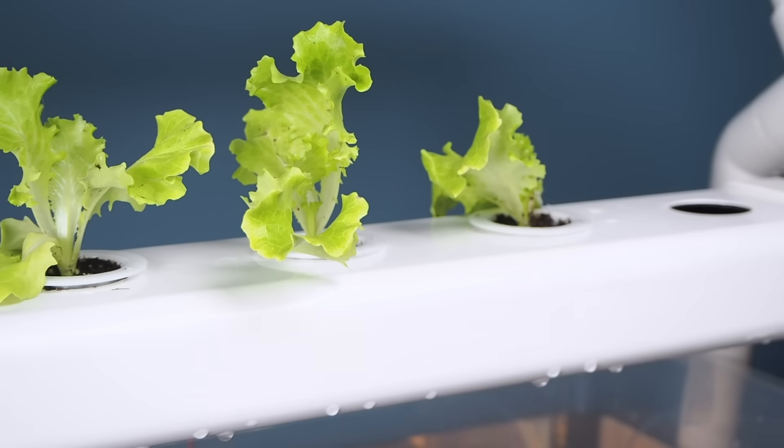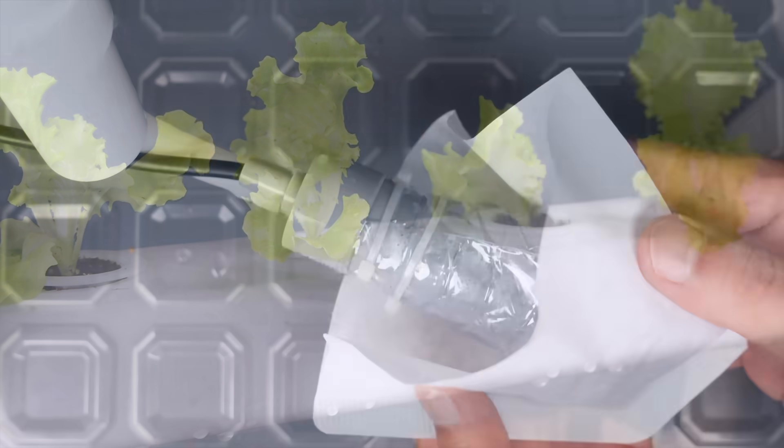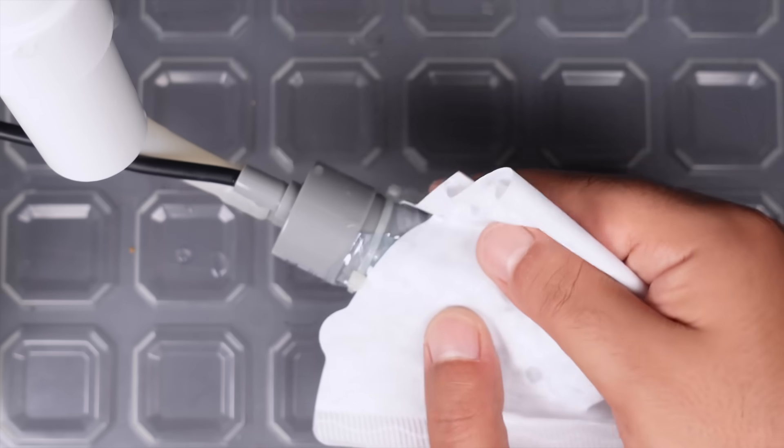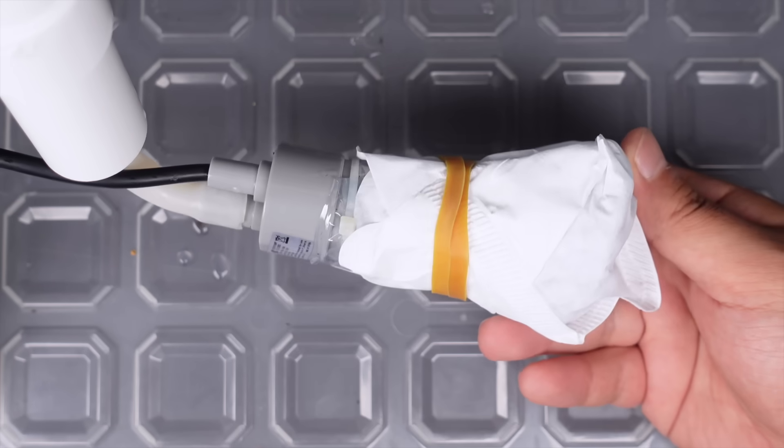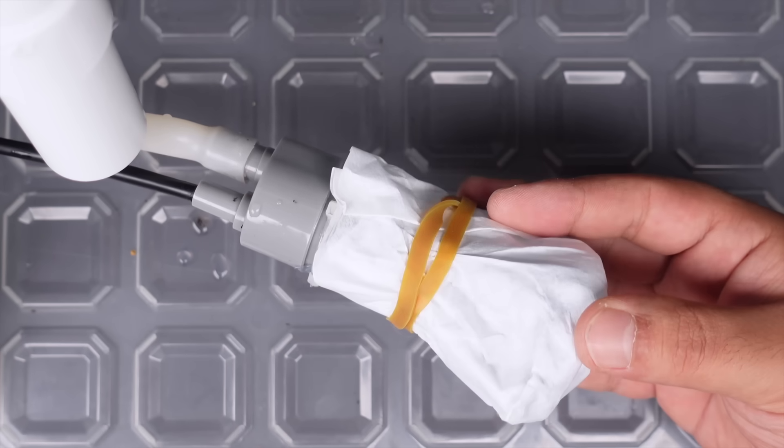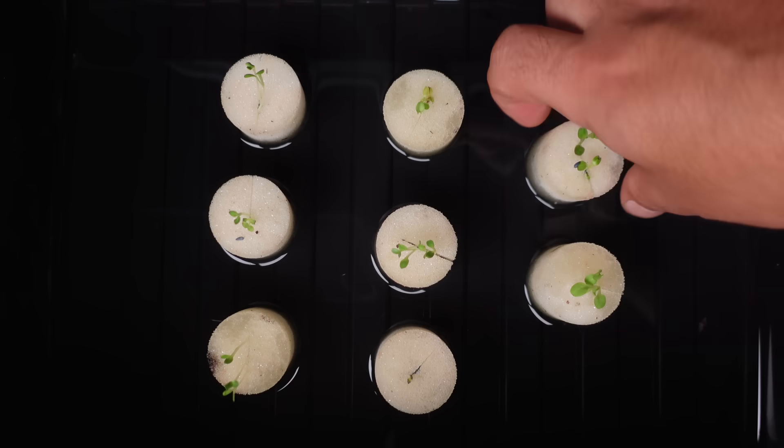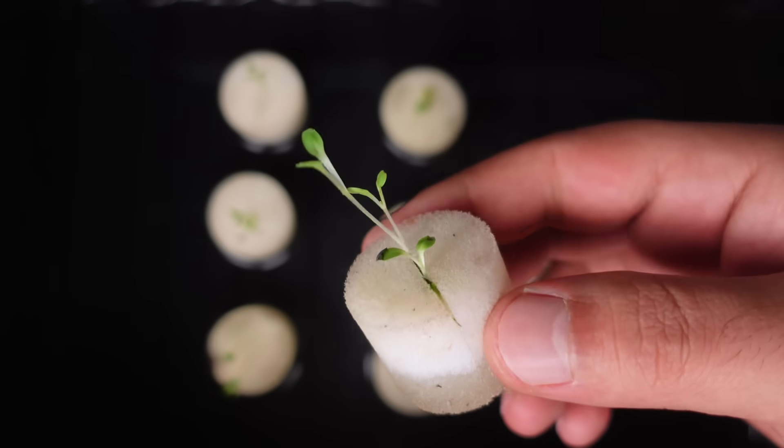In order not to waste these plants, I will wait for them to grow. In the meantime, I protected the water inlet of the pump by covering it with a plastic bottle and a coffee filter. For the next plant germination, I used a growing sponge so I don't have to protect the pump inlet.